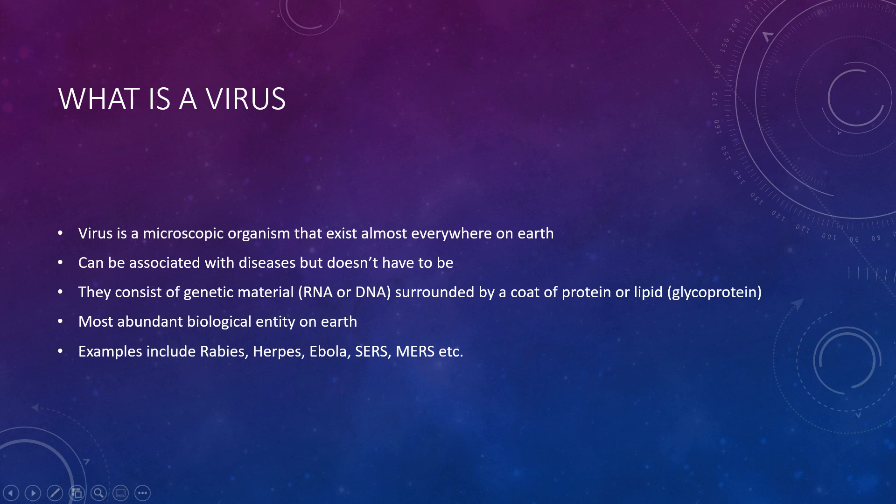The virus is surrounded by a coat of proteins and glycoproteins. Viruses are basically everywhere on earth. We've all been exposed to viruses — most of us have had coronaviruses and respiratory infections in the past — but also rabies, herpes, Ebola, SARS, MERS are all different types of viruses, as well as the common cold and influenza, the common flu that we all get.